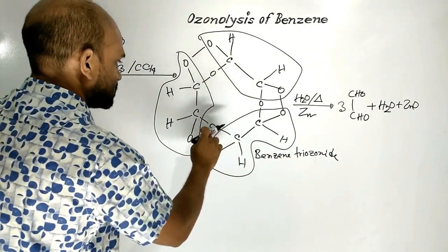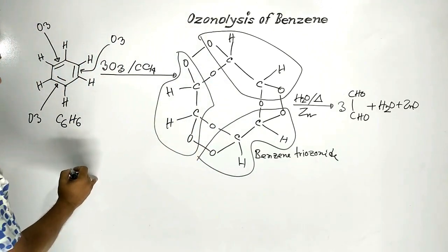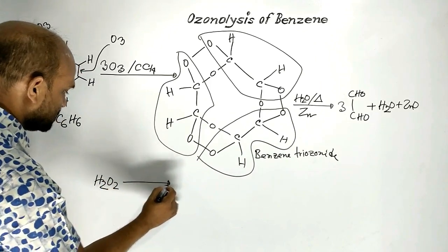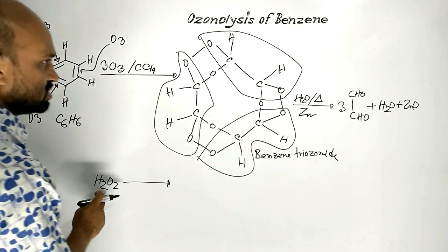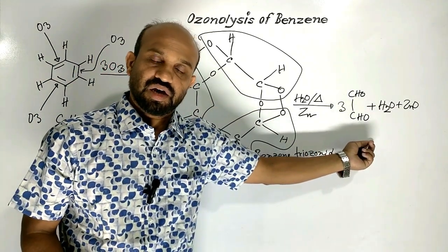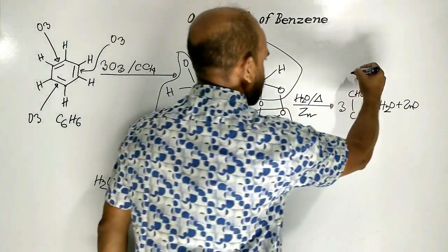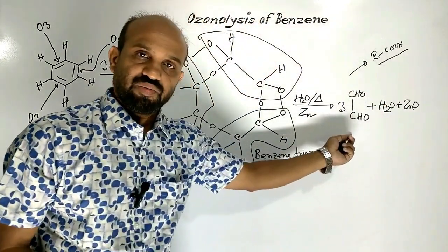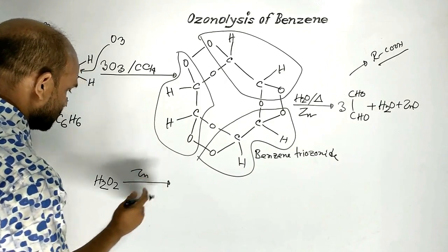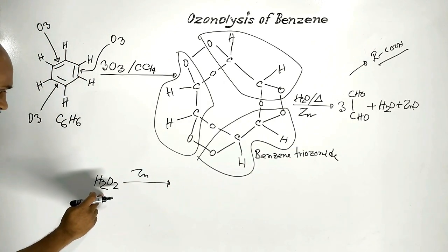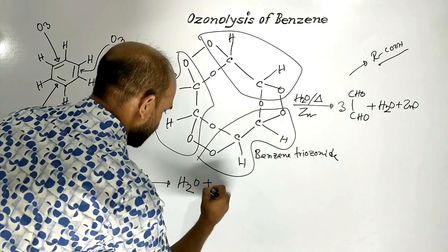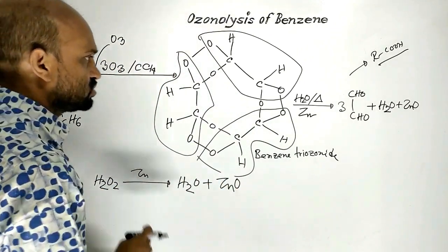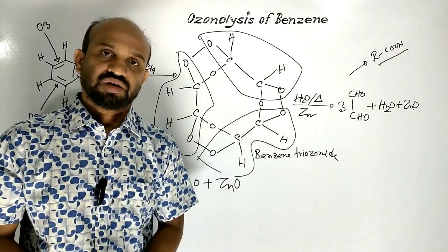These three oxygen atoms combine with water to form hydrogen peroxide, which is a kind of oxidizing agent. This hydrogen peroxide may oxidize the aldehyde glyoxal to form an acid. So to prevent the formation of acid, zinc dust is used. Zinc dust converts hydrogen peroxide to water and zinc turns into zinc oxide, preventing further oxidation.